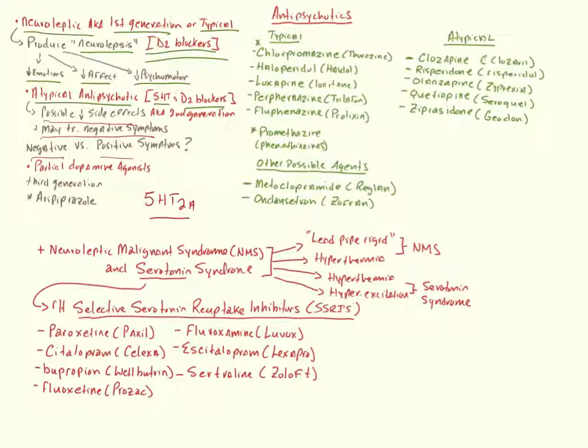And then we have the new agents, and these are what we call partial dopamine agonists. So these are thought to maybe even have a safer profile, because they are only partial antagonists. And there is only one that I'm aware of on the market currently, and that is aripiprazole. So these are pretty new, and I'm only aware of one on the market.